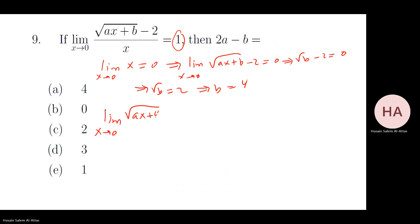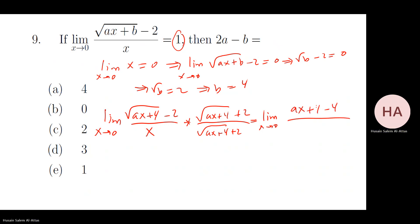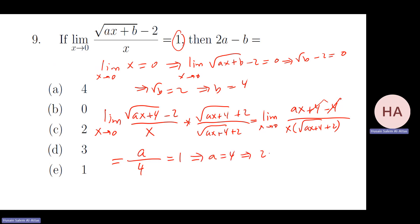With b equal four, we have the limit of the square root of ax plus four minus two over x equals one. Rationalizing: we get ax plus four minus four over x times the square root of ax plus four plus two. This simplifies to a over the square root of four, which equals a over four at zero. Setting that equal to one gives a equals four.